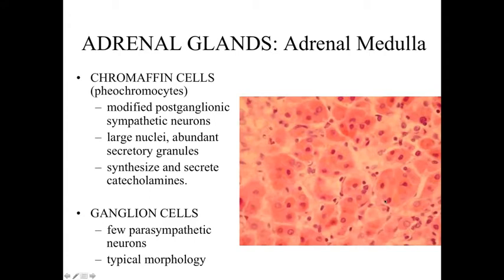The adrenal medulla is the inner region of the adrenal gland, paler-staining than the cortex. The majority of cells are chromaffin cells, or pheochromocytes — modified post-ganglionic sympathetic neurons with larger nuclei and lots of secretory granules, involved with synthesizing and secreting catecholamines such as adrenaline or noradrenaline, also called epinephrine or norepinephrine. Scattered amongst the chromaffin cells are ganglion neurons — parasympathetic neurons with a large cell body and a distinct euchromatic nucleus — but these are rarer within the adrenal medulla.